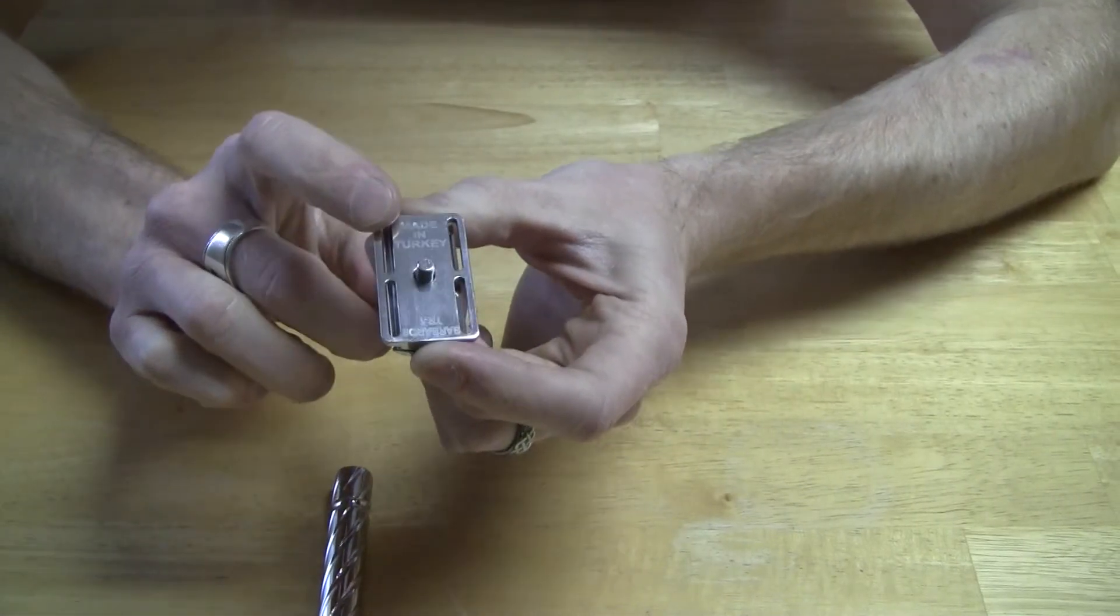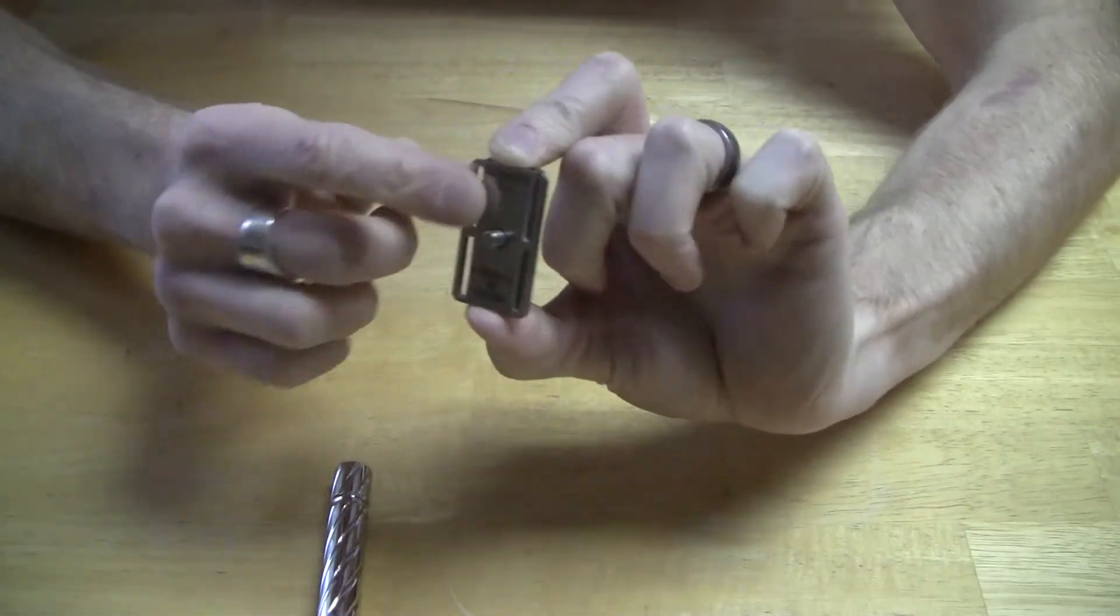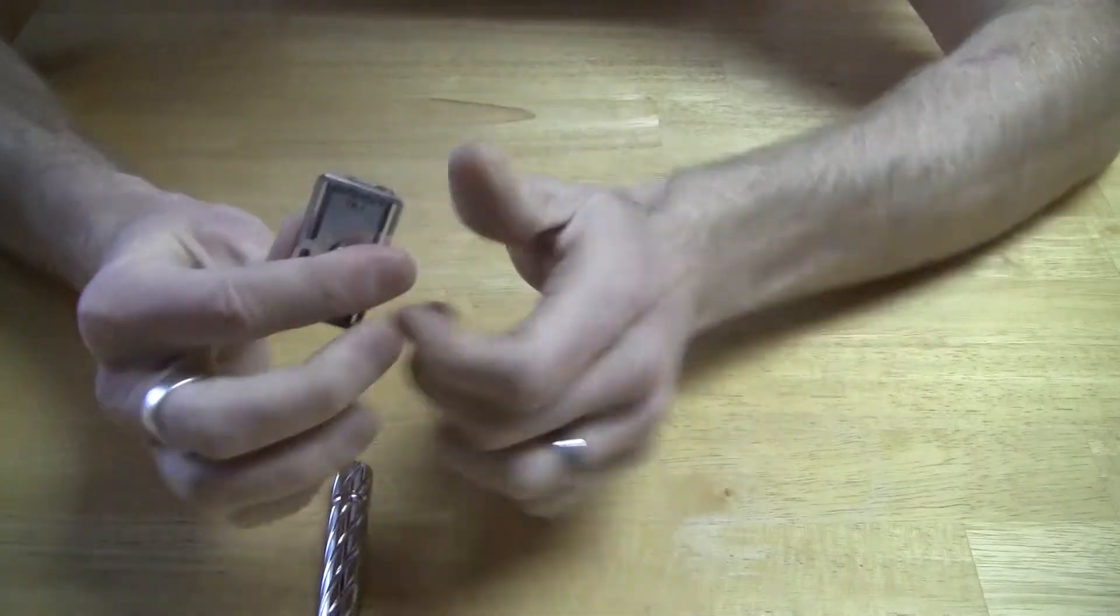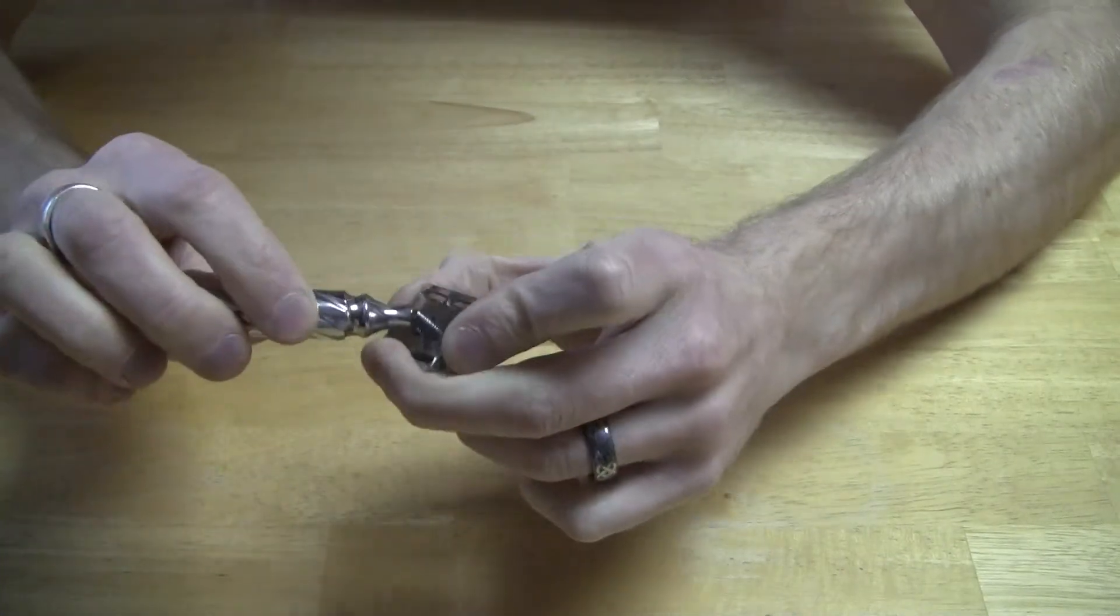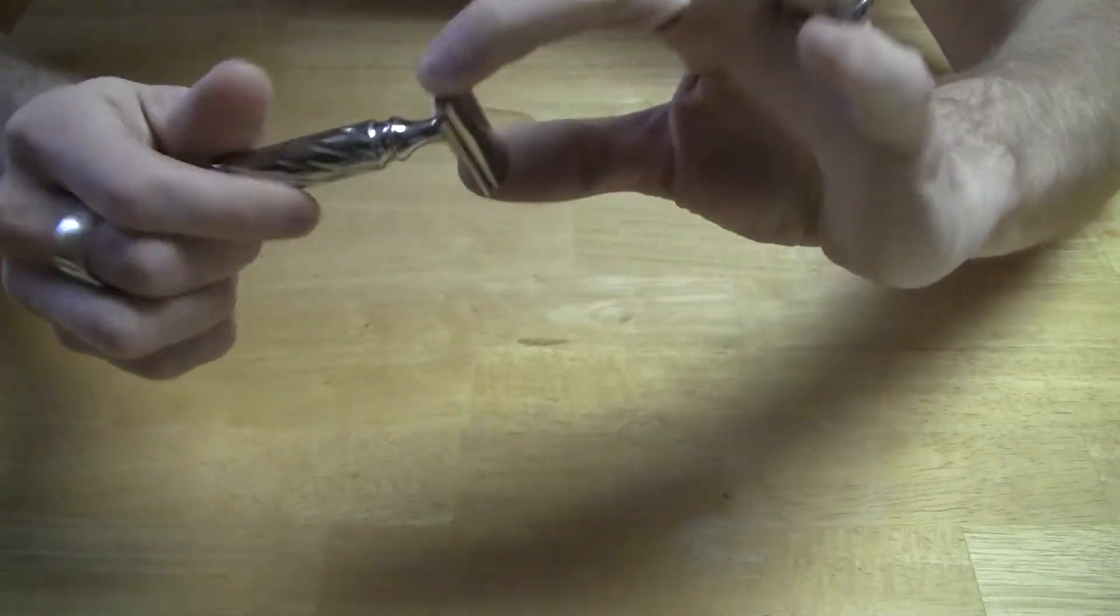Etching says made in Turkey on the top here and then Barbaros TR1. That's actually going to be changed in the production razor to just say Barbaros TR1.